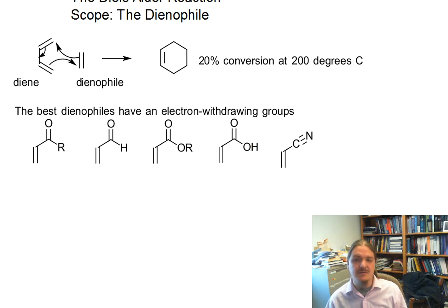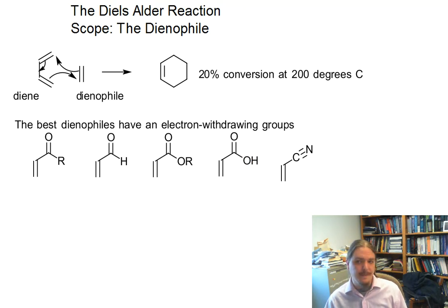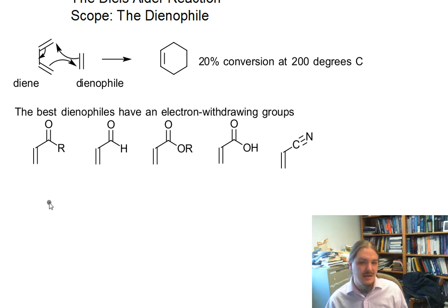And there are others, but these are some of the ones that you might see. And so taking our simplest of all dienes and reacting them with, say, the aldehyde. This reaction generates now a product, and the reaction occurs at lower temperatures and in a much higher yield. So lower temperatures means that the reaction is actually faster.